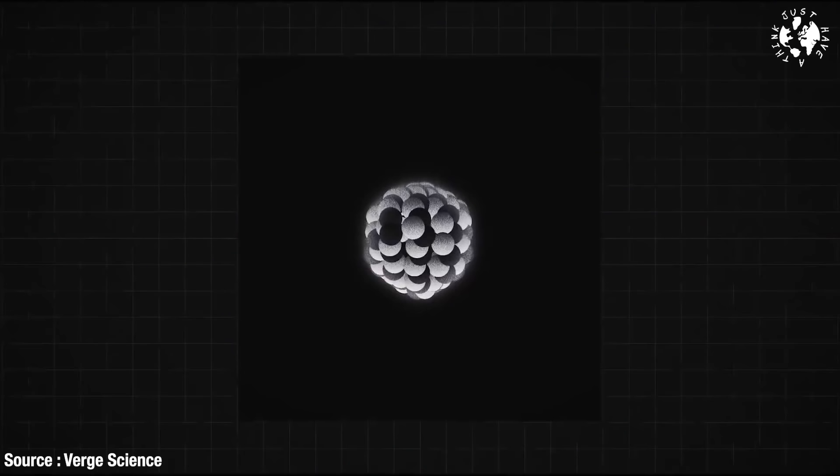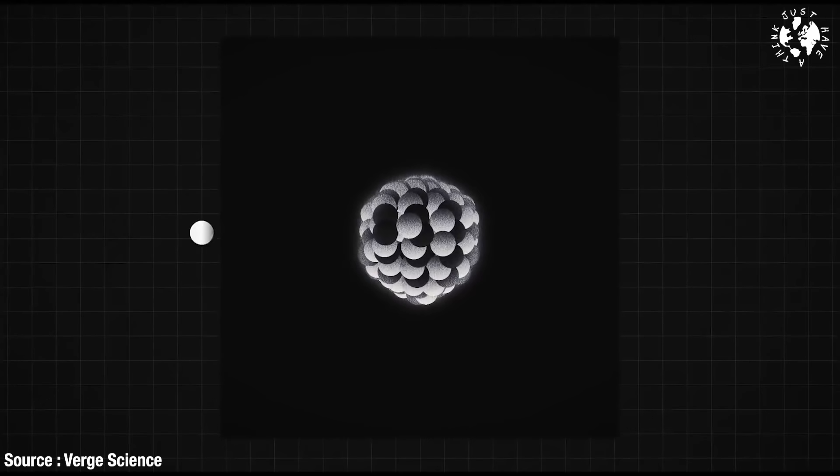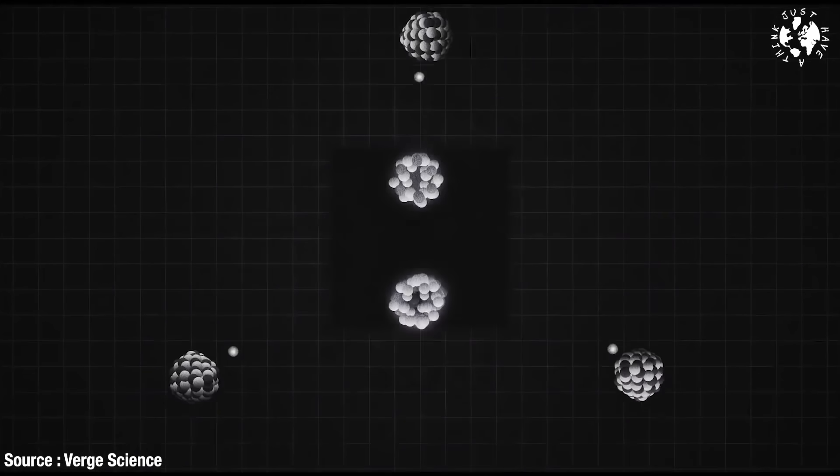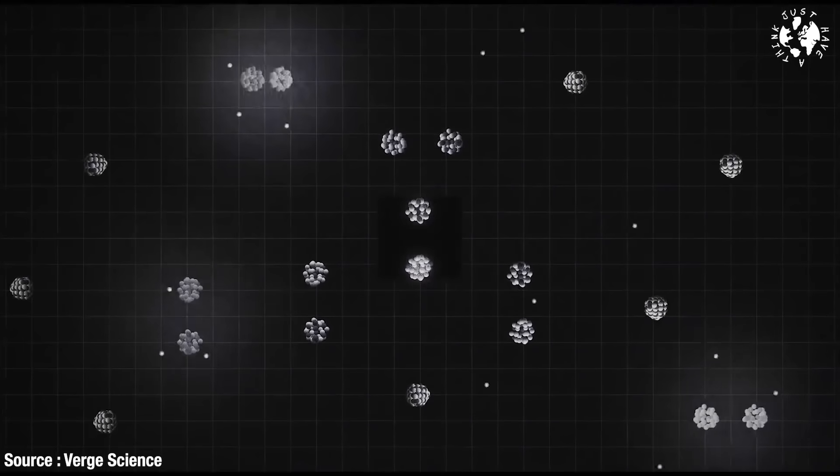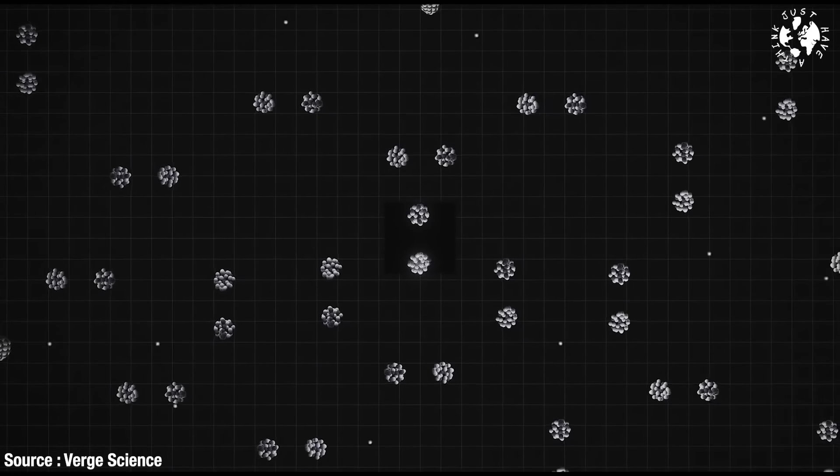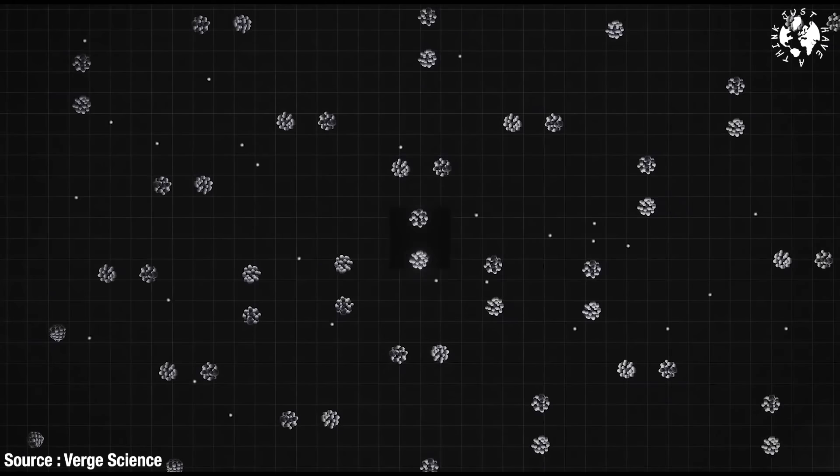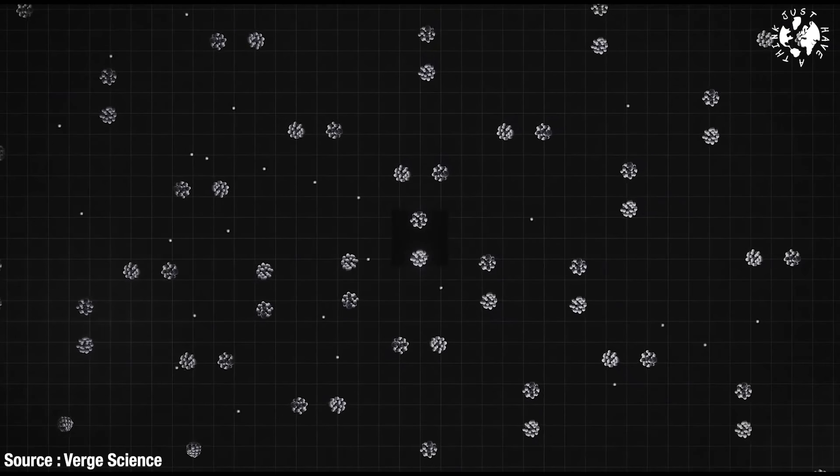As uranium-235 gets hit by a neutron and starts splitting and releasing its energy, it also releases more neutrons which then go flying around all over the place. If those neutrons hit other uranium-235 atoms, then you get a chain reaction. And if you don't bother to control the chain reaction, you get a nasty meltdown and eventually a fairly unpleasant explosion and radioactive fallout blowing across large areas. And you don't want that.